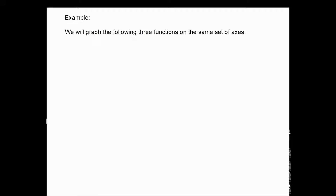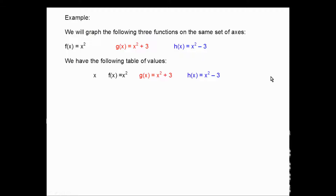To illustrate, we'll graph the following three functions on the same set of axes so we can see the movement. f(x) = x² will be drawn in black, g(x) = x² + 1 in red, and h(x) = x² − 3 in blue. For our table of values, I'll keep the x values in black for all of them, then the y values colored accordingly.